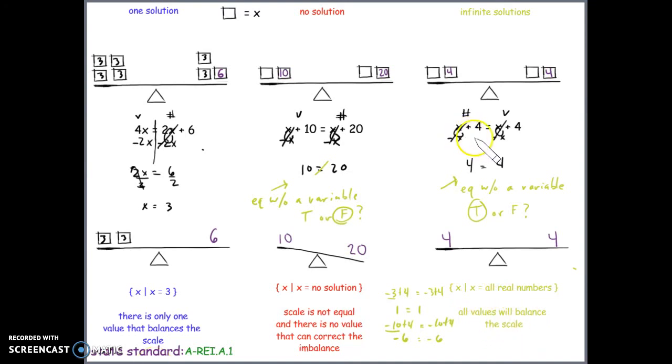So equations that have expressions that are the same on both sides are called identity equations. They're identity equations because it does not matter what the value is for the variable, the equation will always be true.